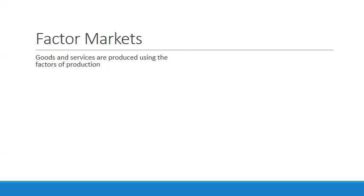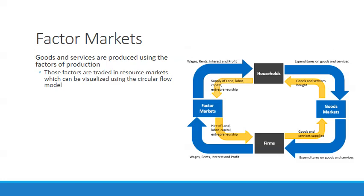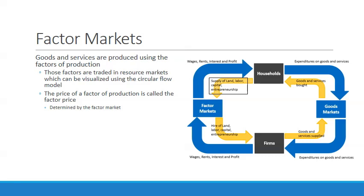We'll begin this lesson on investment by looking at factor markets. Goods and services are produced using the factors of production — land, labor, capital, entrepreneurship — and those factors are traded in resource markets, visualized using the circular flow model. The price of a factor of production is called the factor price, and those factors provided by households have their price determined in factor markets.